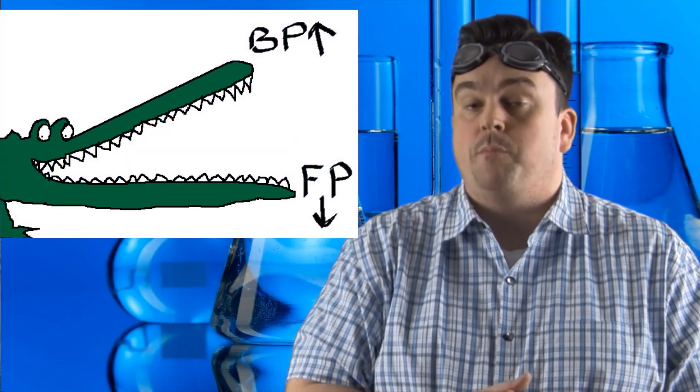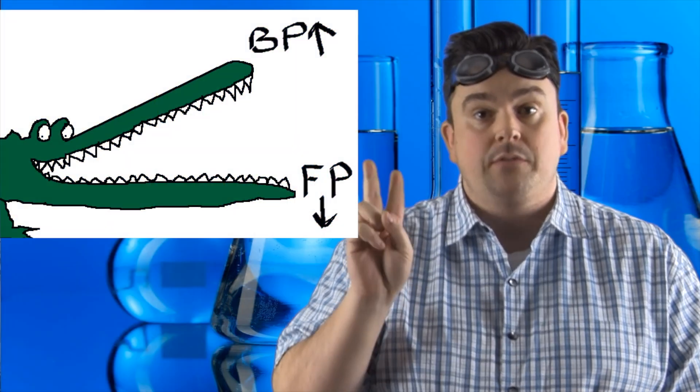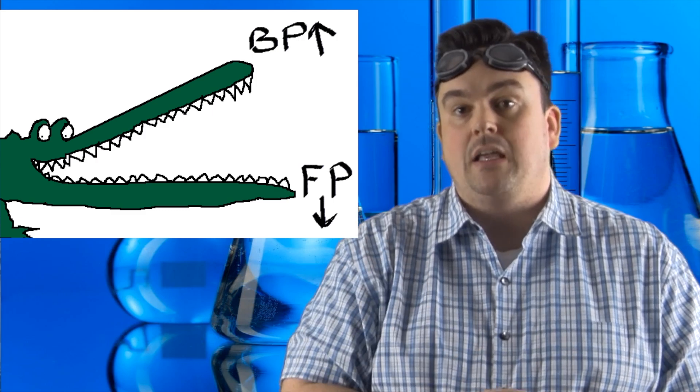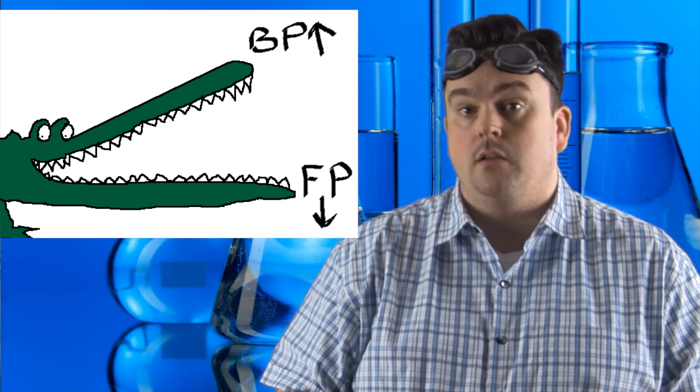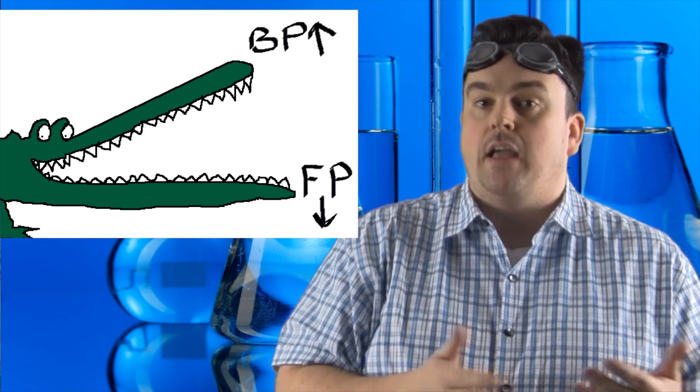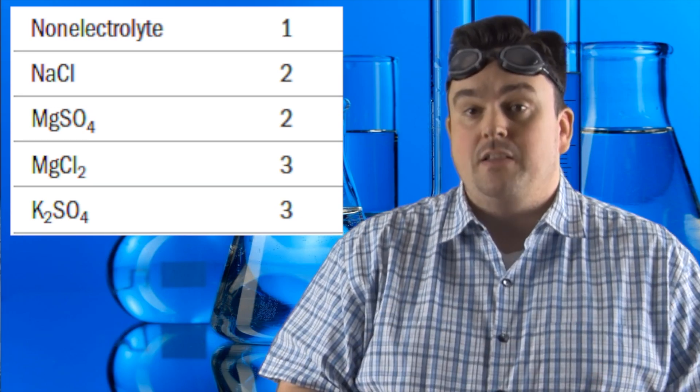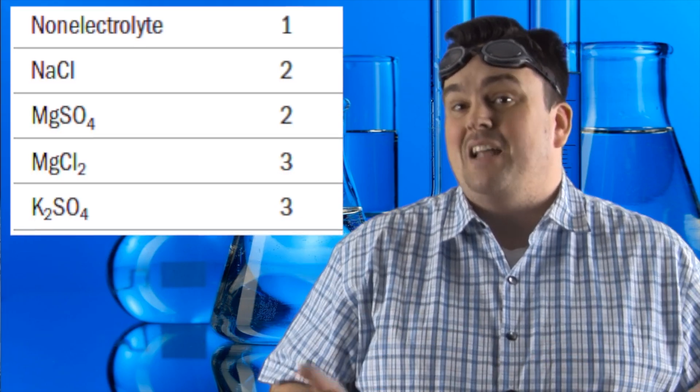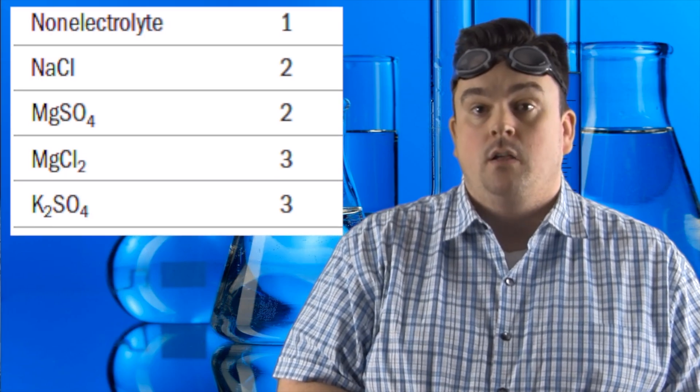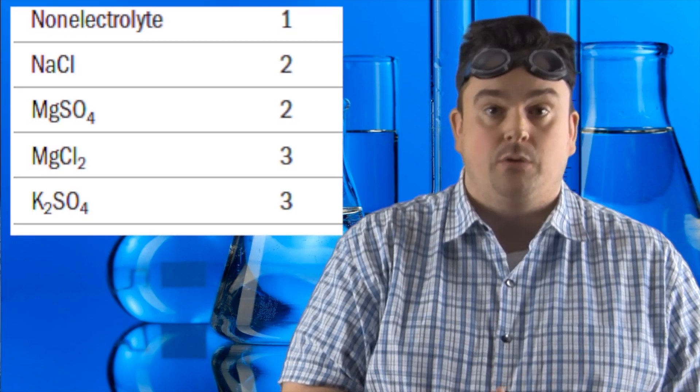For determining the number of particles in solution, it comes down to two factors. The first being the actual concentration of the substance, usually measured in molarity, and the second being the van't Hoff factor. For molecular or covalent substances, they only have a van't Hoff factor of one because they do not dissociate in water.